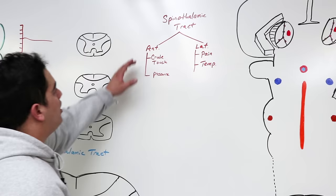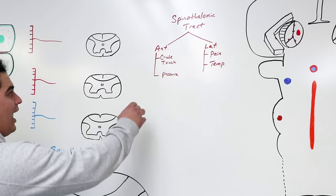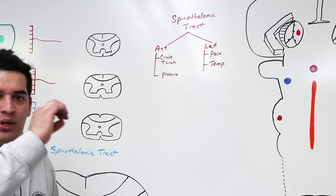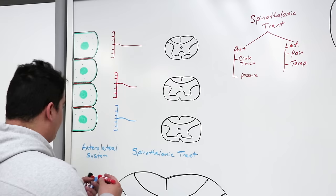So we know the spinothalamic tract has anterior and lateral divisions. The anterior carries crude touch and pressure; the lateral carries pain and temperature. The main focus will be the pain and temperature pathway — so how do we stimulate this pathway?